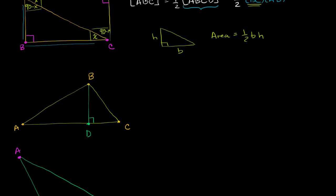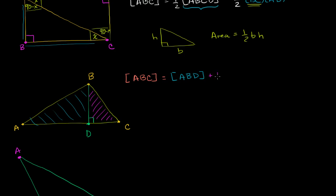We can say the area of triangle ABC is equal to the area of triangle ABD plus the area of triangle BCD. This is useful because we know how to find the area of right triangles now — both of these angles are 90 degrees. The area of ABD is one half times the base, which is the length AD, times the height, which is the length of BD.